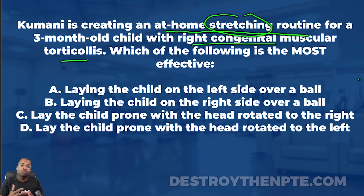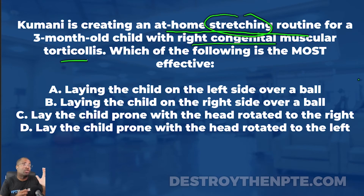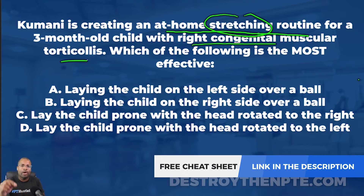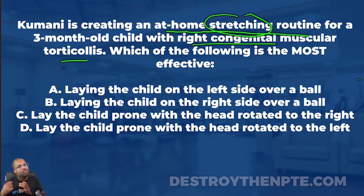When we're talking about muscular torticollis, the first muscle that should pop into your mind is the sternocleidomastoid. What creates this muscular torticollis is when your sternocleidomastoid becomes tight. Now, the right sternocleidomastoid is going to side-bend the head to the right and rotate the head to the left. So it does ipsilateral side bend and contralateral rotation — that's the role of the sternocleidomastoid.